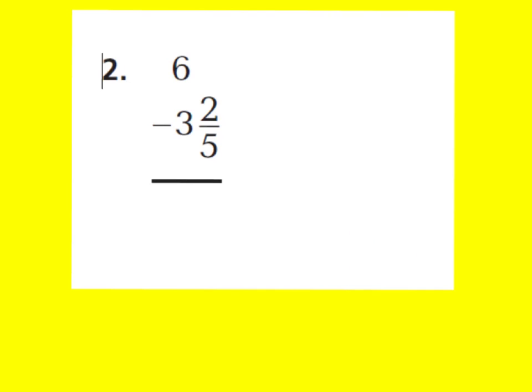Let's look at number 2. It says 6 wholes minus 3 and 2 fifths. We might be thinking we can just drop down the 2 fifths and then subtract our wholes. But we cannot do that in this case. If we don't have a fraction in this spot, we cannot subtract — it would be like saying 0 fifths minus 2 fifths, and we can't do that.